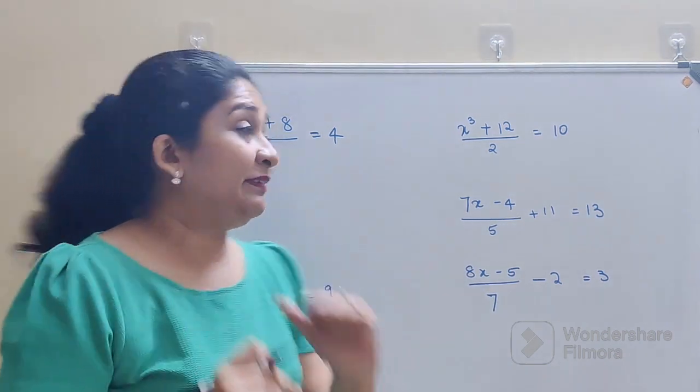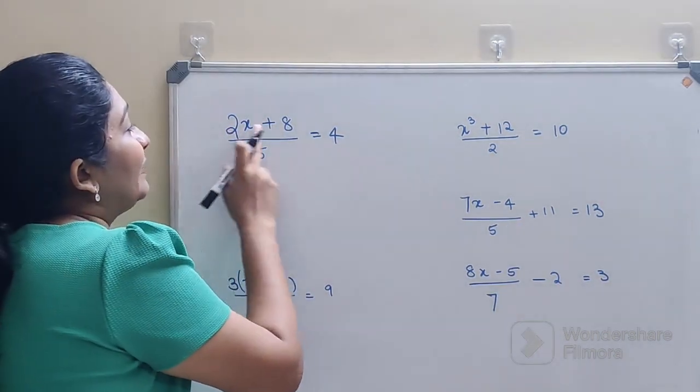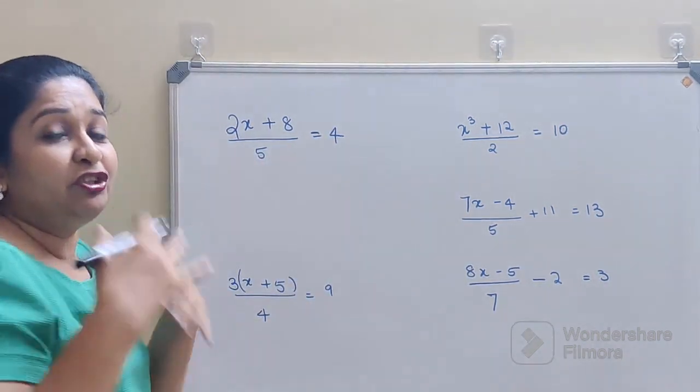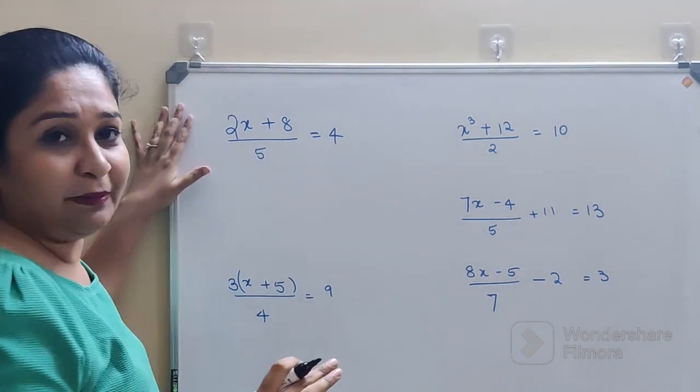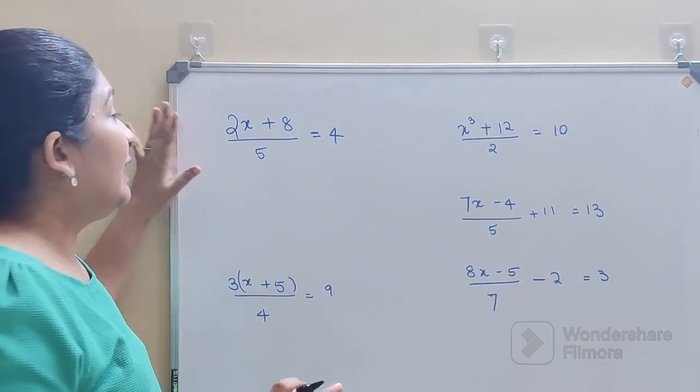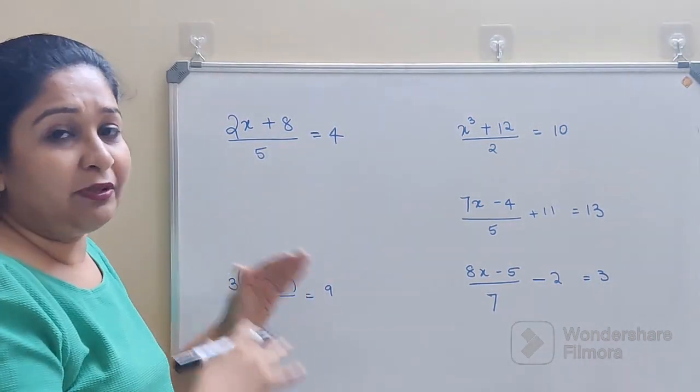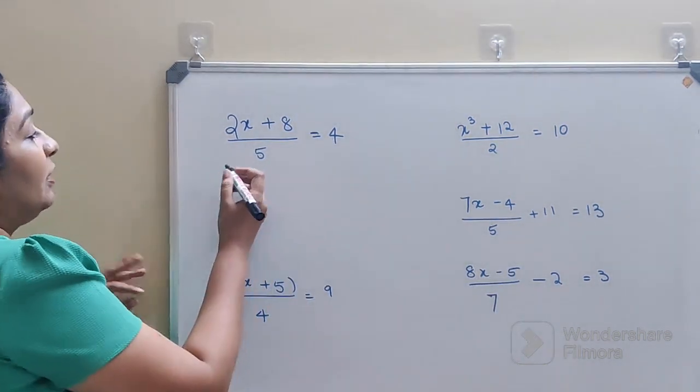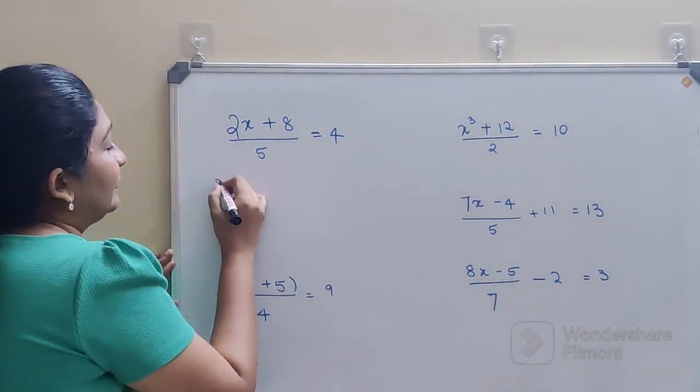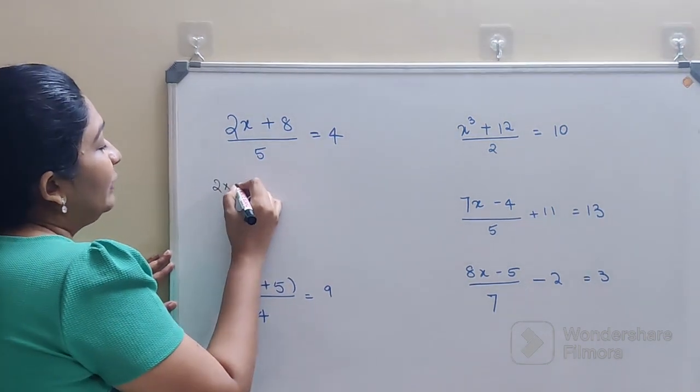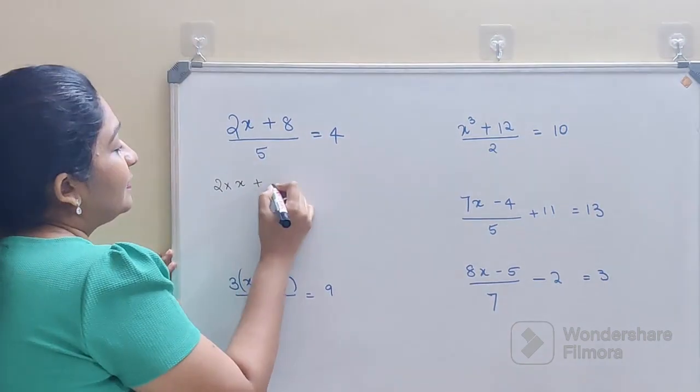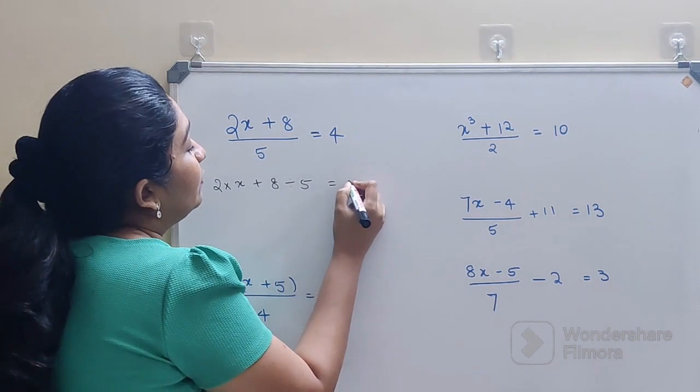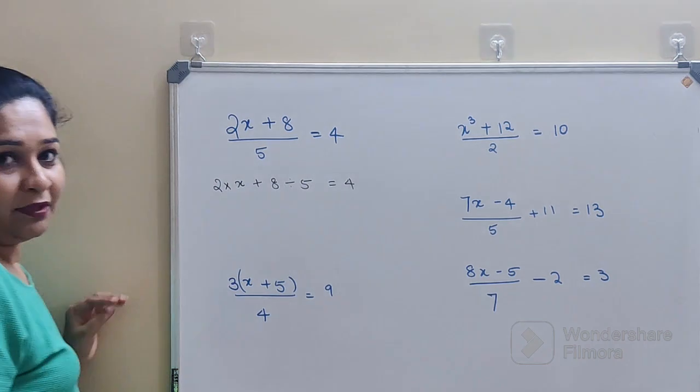So here what we will do is, see, understand: 2x plus 8 divided by 5 is equal to 4. So just for explanation I have taken this particular example. And then after this particular explanation we can actually do all of this orally. So here what we will do is, see if you write this, we have what? 2 into x plus 8 divided by 5 is equal to 4.